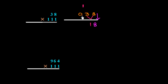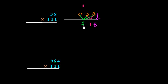Now we will add 3 numbers: 0, 3, 8. So 0 plus 3 plus 8 is 11, and we already carried 1, so 11 plus 1 is 12. We write down 2 and carry 1.